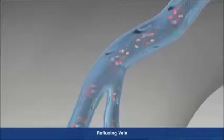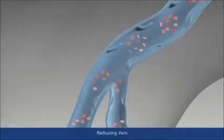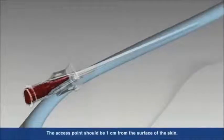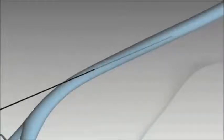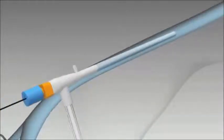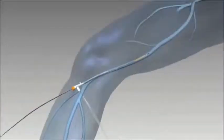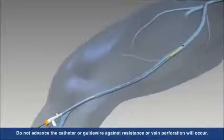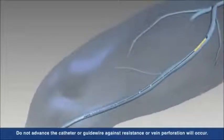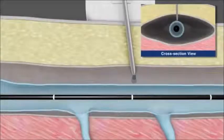Under ultrasound guidance, the vein is accessed using standard endovascular technique by inserting a seven French sheath into the vessel. The closure fast catheter is inserted into the vein and advanced up to the saphenofemoral junction or the SFJ and positioned two centimeters from the SFJ, again under ultrasound guidance.